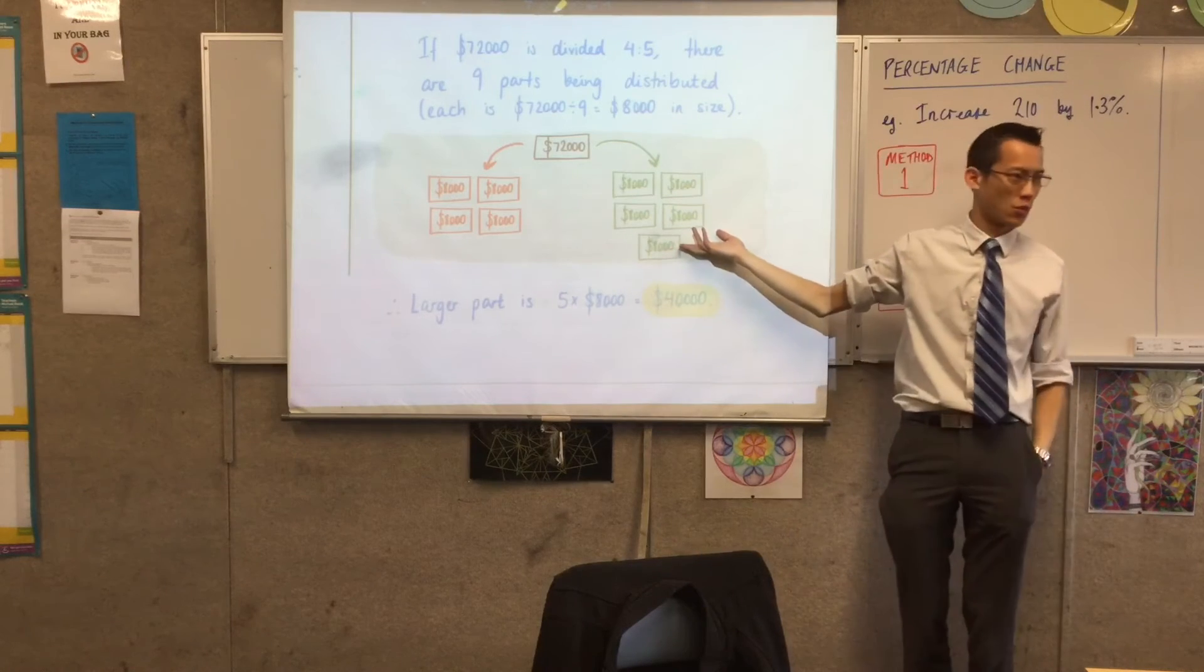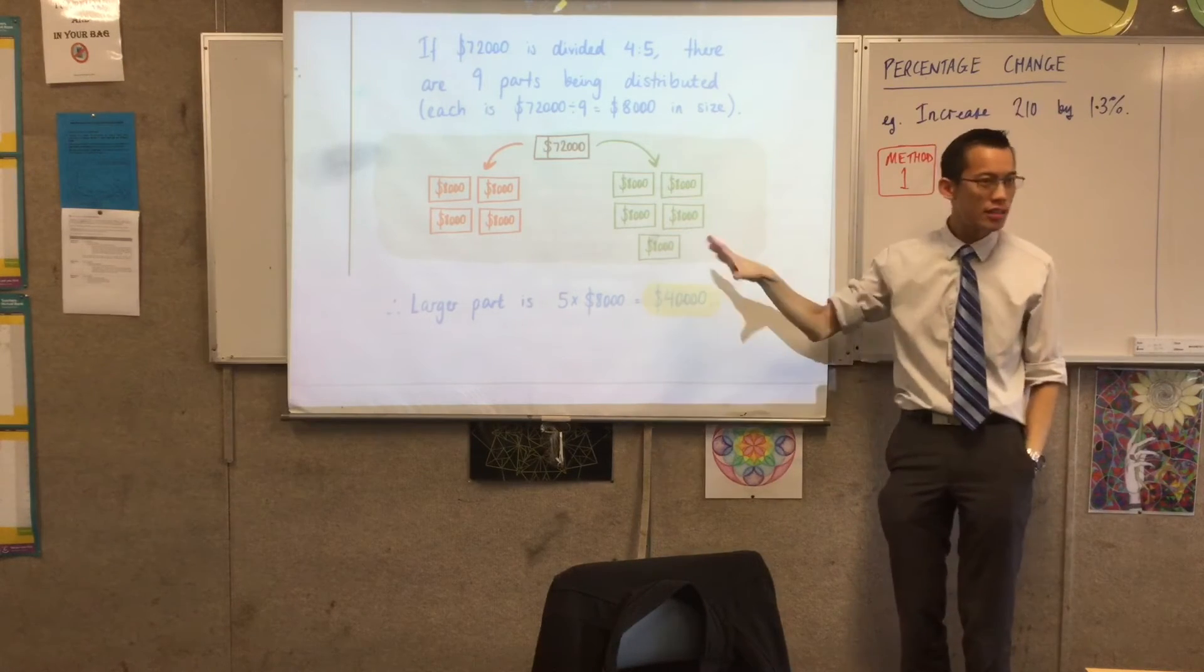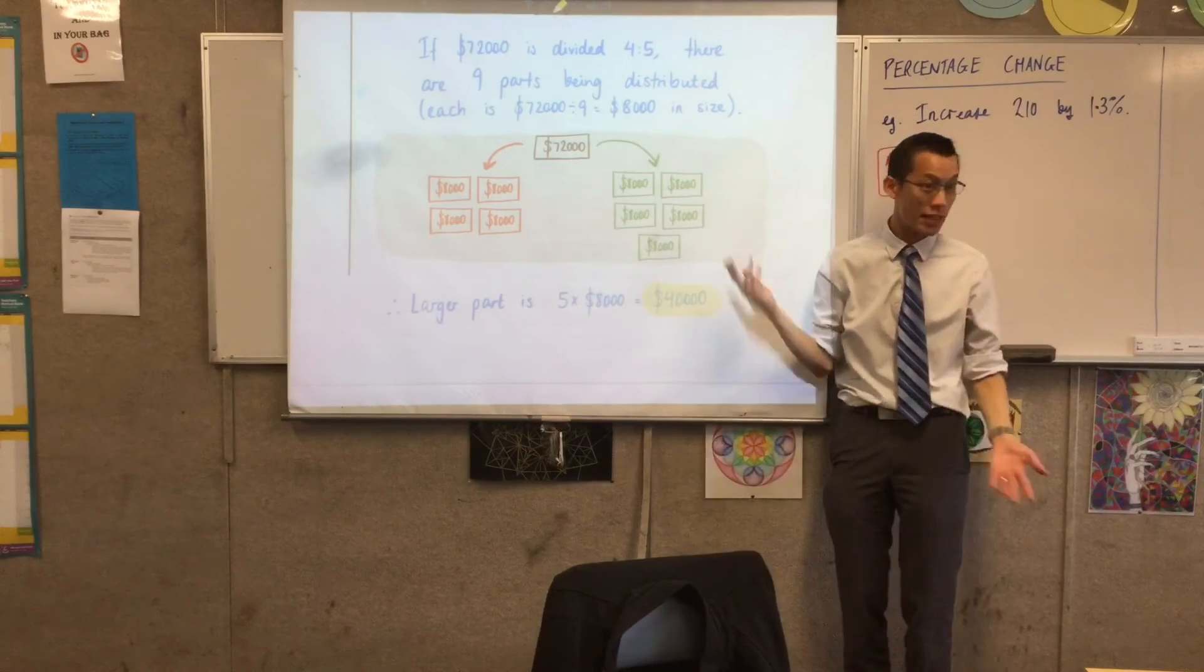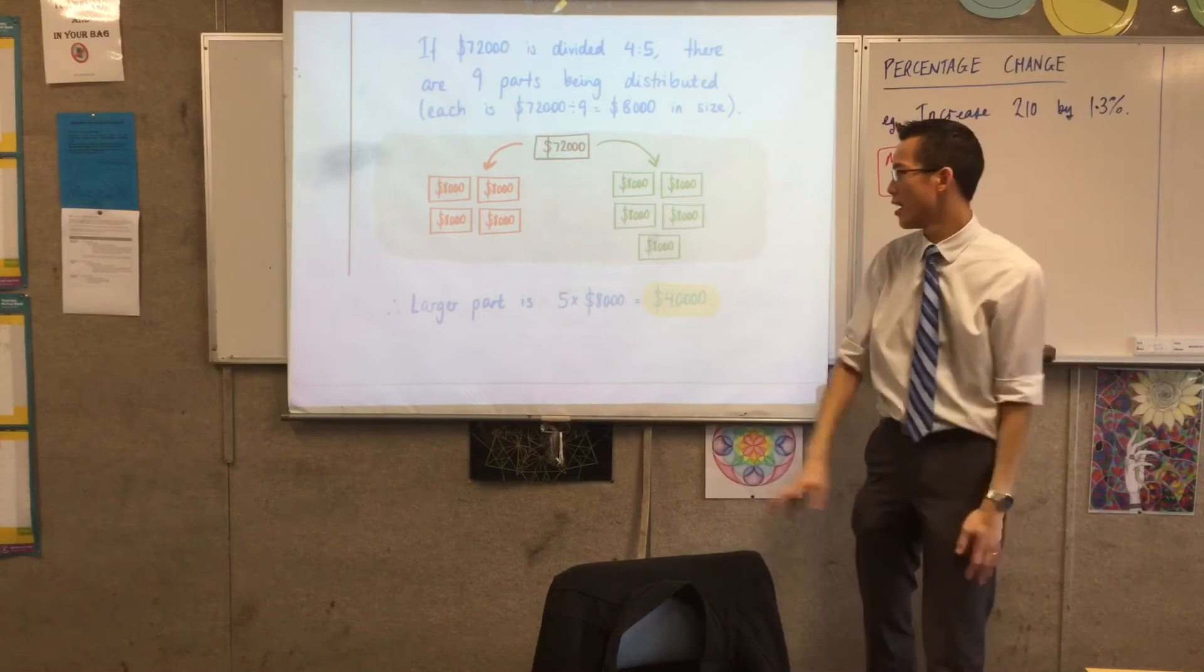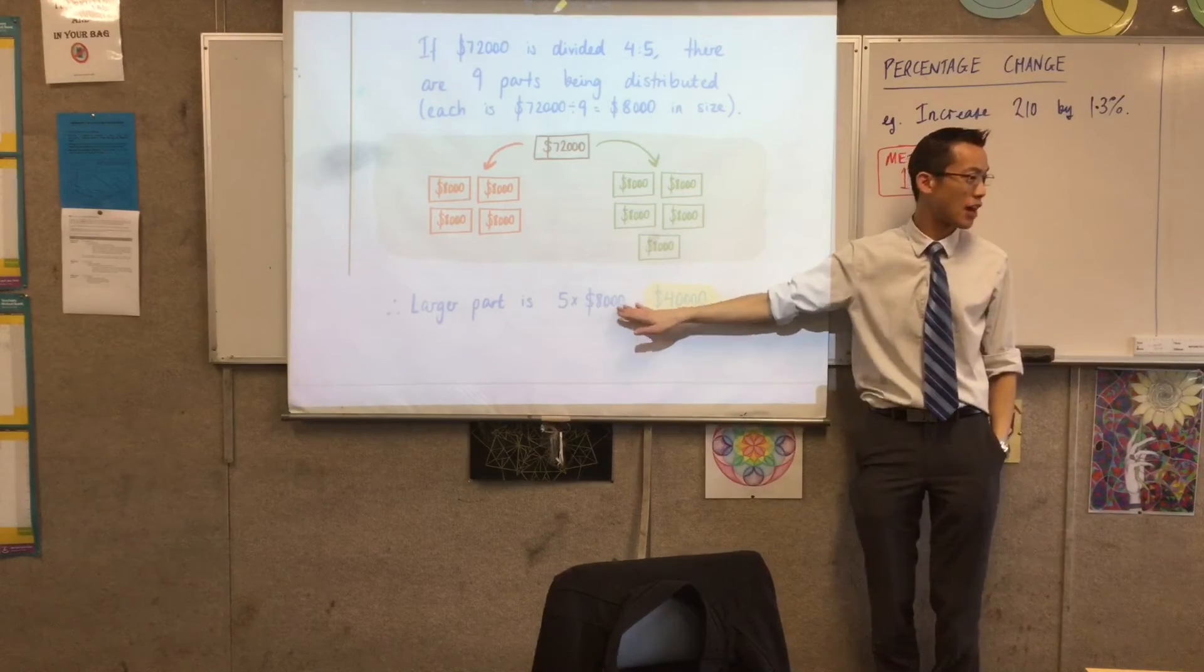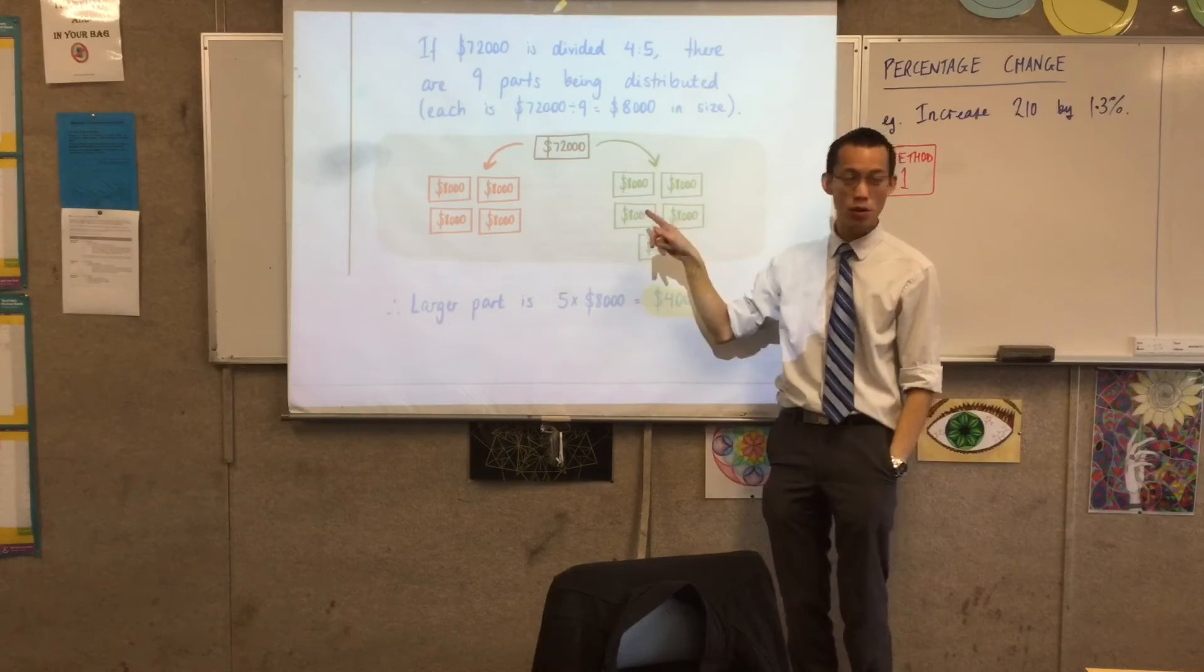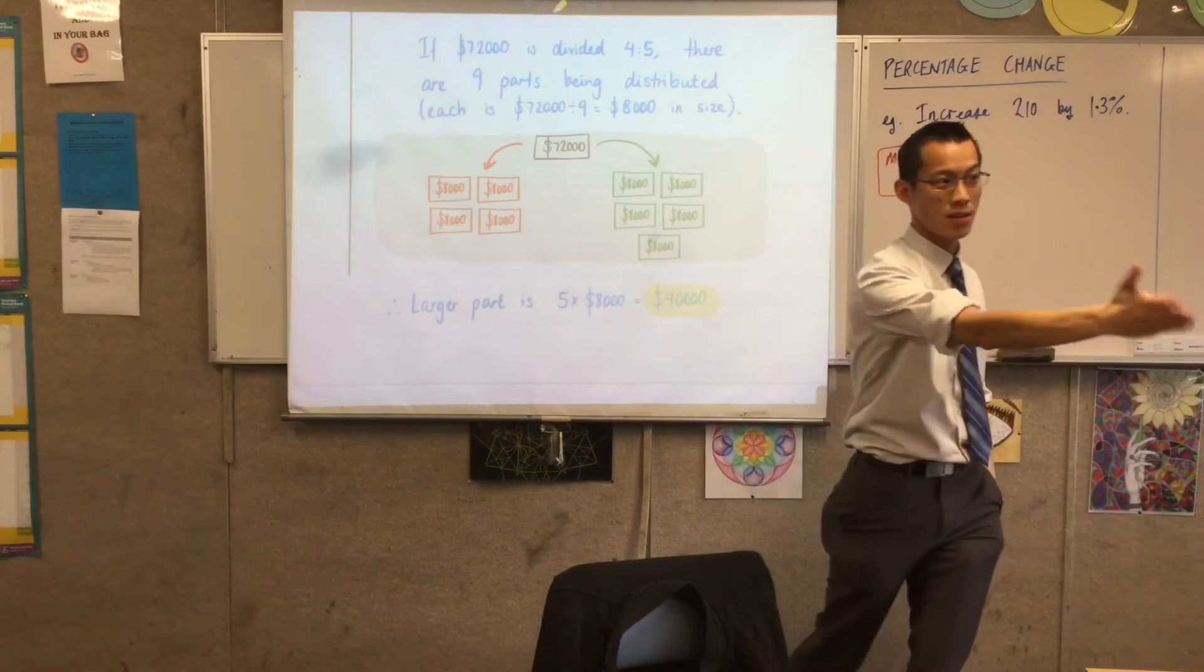So clearly you don't have to draw a diagram like this. But I hope you can see what I've done. It's like, okay, you slice it up, and then this guy gets four of them, and this one gets five. That's what four to five means. So that's where this number, five times 8,000, comes from. There are five of these parts, and each one of the smaller bits is that size. Question?